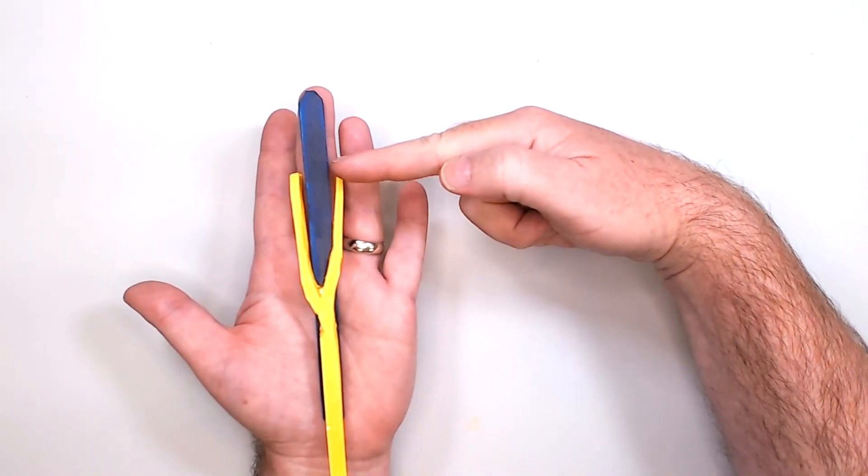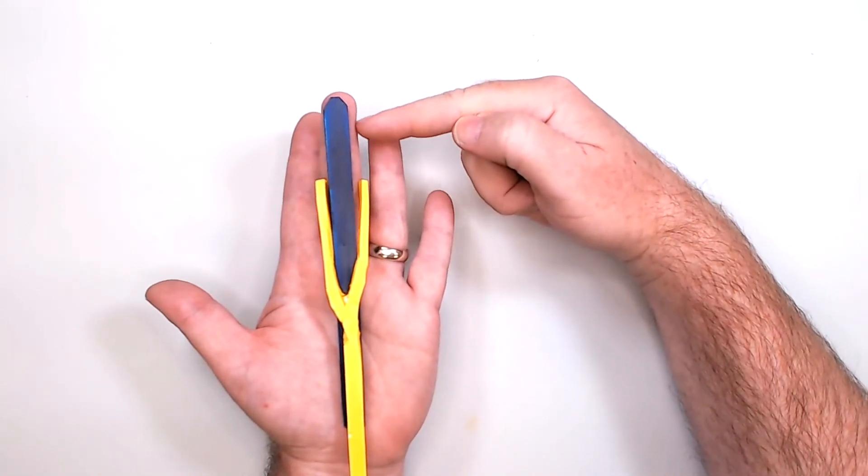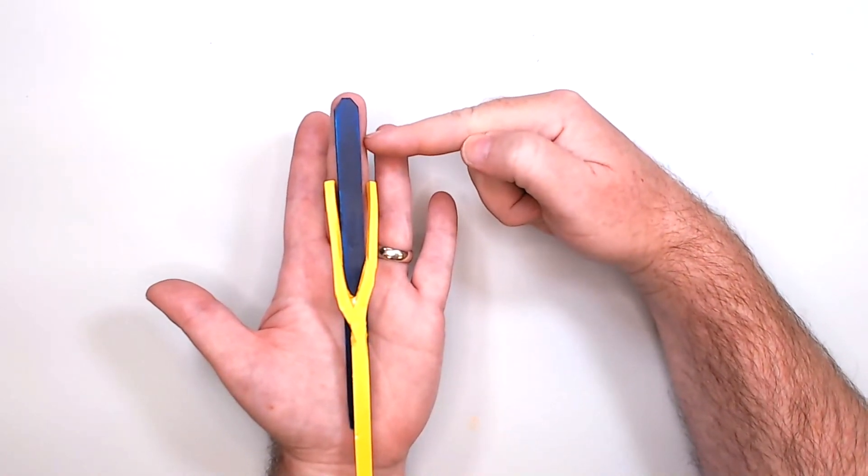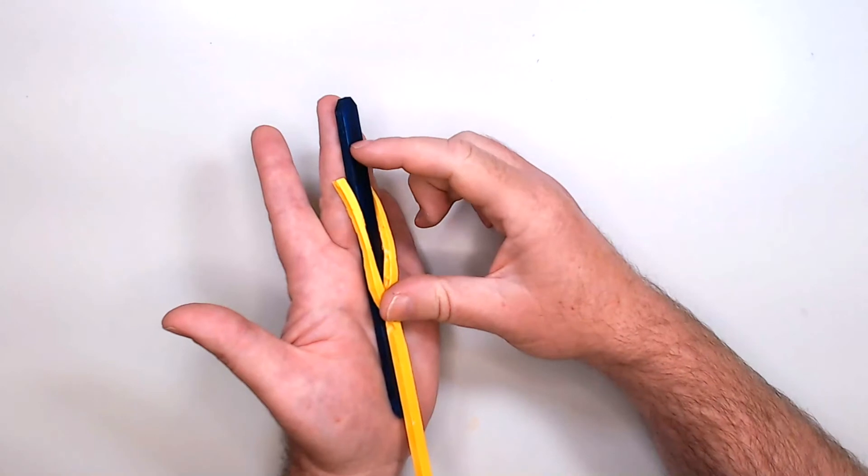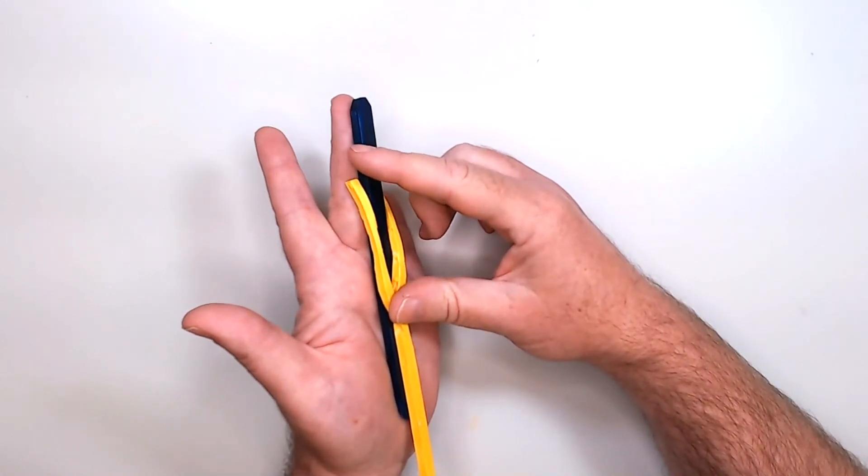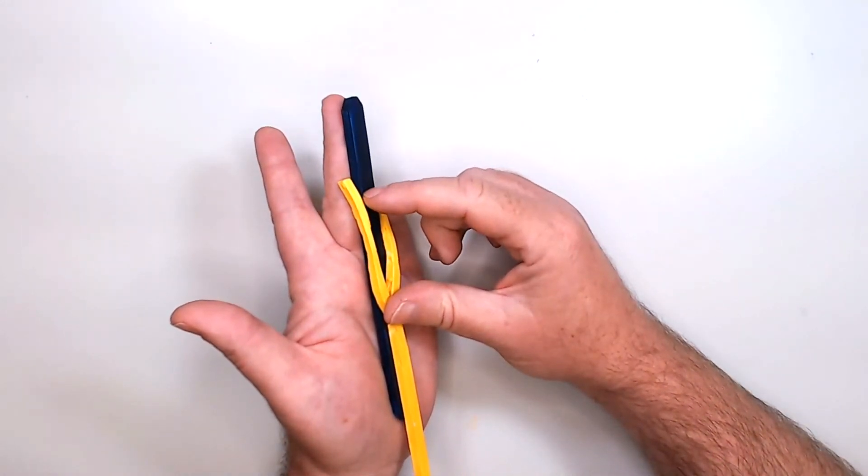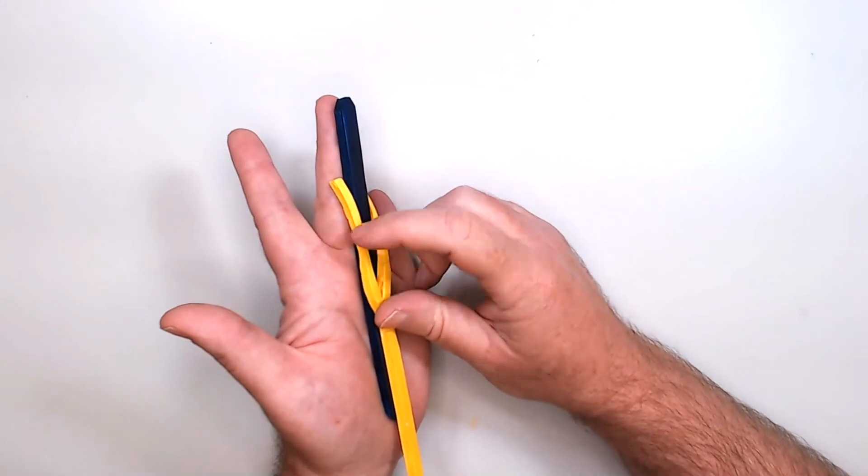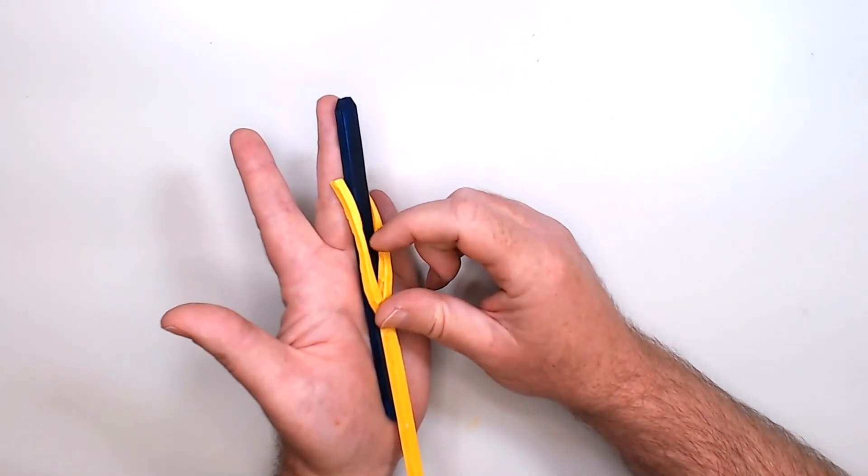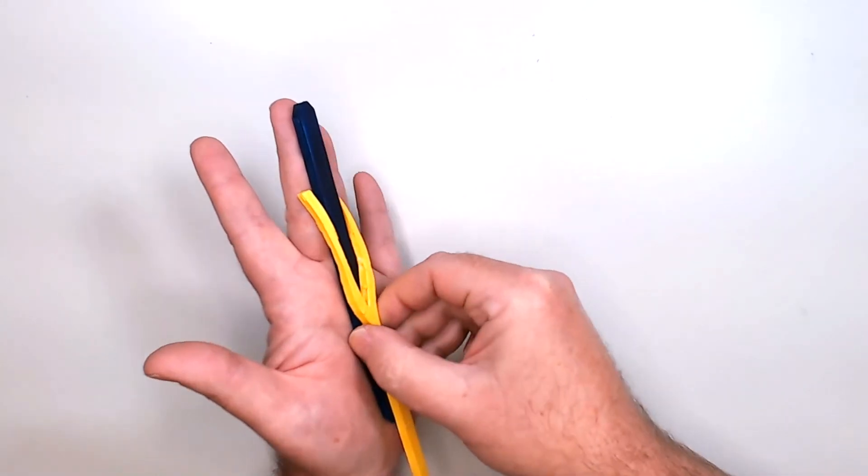You lose the ability to flex the distal interphalangeal joint. The proximal interphalangeal joint and the metacarpal phalangeal joint will be unaffected.